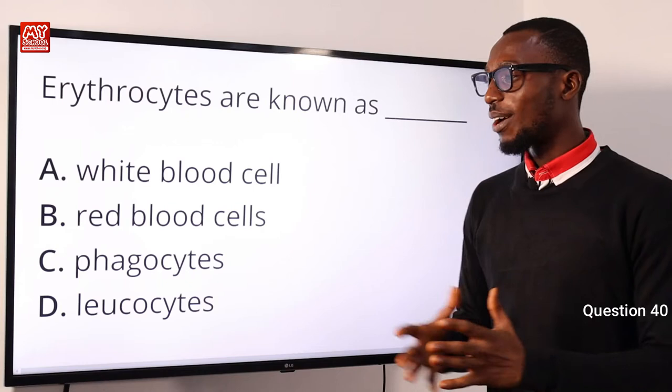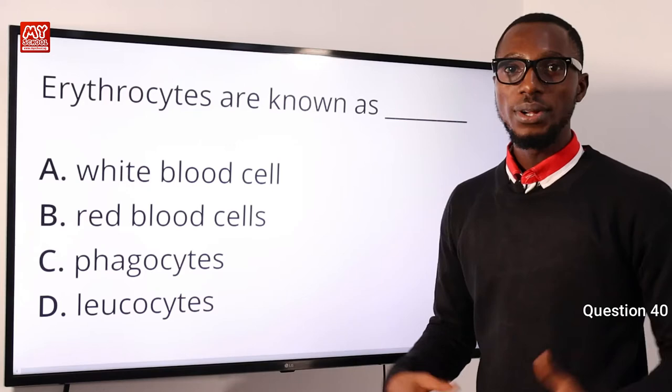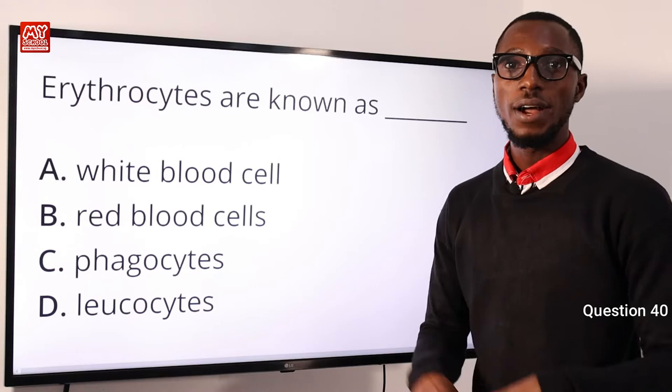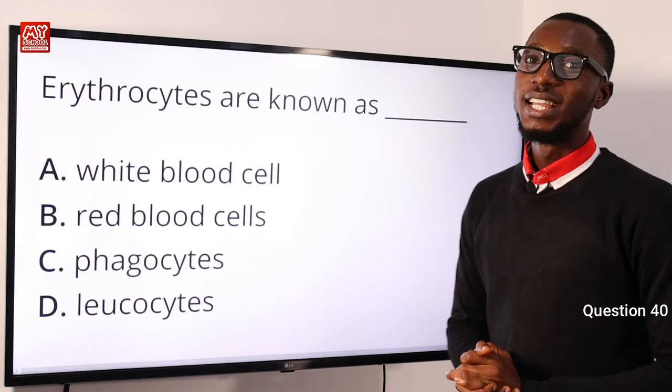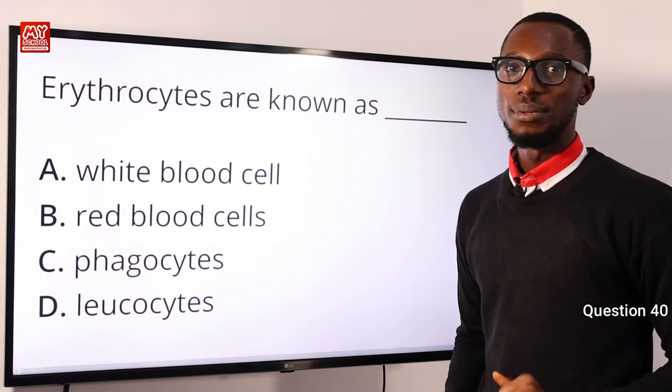Question 40: Erythrocytes are also known as what? They are also known as red blood cells. White blood cells are also known as leukocytes, responsible for body defense, along with phagocytes involved in engulfing foreign particles. The correct option is option B — red blood cells are also known as erythrocytes, and erythrocytes are also known as red blood cells.